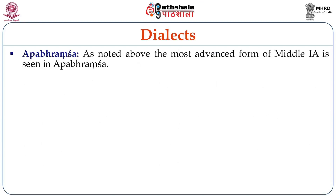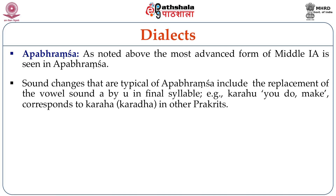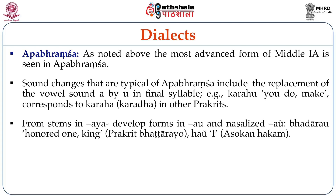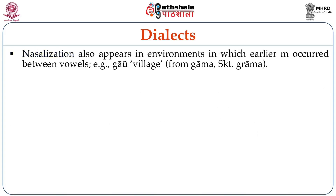Grammatical features also show dialectal variation. For example, the Ashokan dative singular form is aayye in the Western dialects (Girnar athaya, for the purpose of), but aayye in the East (Kalsi, Dhavuli — athaya). Upper Brahmsha, as noted above, is the most advanced form of Middle Indo-Aryan. Sound changes typical of Upper Brahmsha include the replacement of the vowel sound OR by U in the final syllable — for example, karahu (you do/make) corresponds to karaha or karadha in other Prakrts.